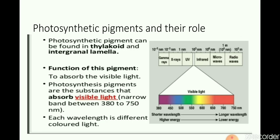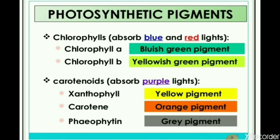Now we see the photosynthetic pigments and their role. A photosynthetic pigment is a pigment that is present in chloroplasts and captures the light energy necessary for photosynthesis. The main photosynthetic pigment is chlorophyll, which absorbs blue and red light and provides green color to plants. Chlorophyll is divided into chlorophyll A, which provides a bluish-green color, and chlorophyll B, a yellowish-green pigment. The second photosynthetic pigment is carotenoid, a type of accessory pigment that absorbs purple light and contains three types: xanthophyll, a yellow pigment; carotene, an orange pigment; and pheophytin, which provides gray or brown color.